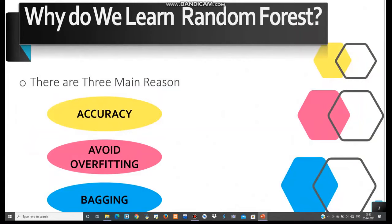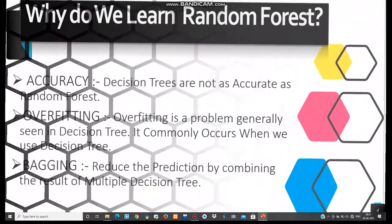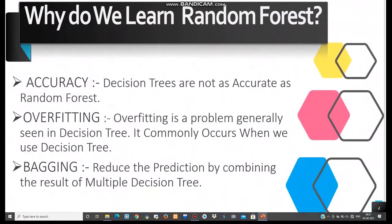The first question that arises is: why do we learn random forest when we already have decision tree? There are three main reasons. First is accuracy — decision trees are not as accurate as random forest. Second is avoid overfitting — overfitting is a problem commonly seen in decision trees; it occurs when your model learns disturbances during training. Third is bagging — the basic idea behind bagging is to reduce prediction error by combining the results of multiple decision trees.